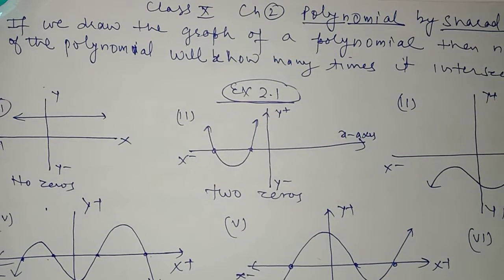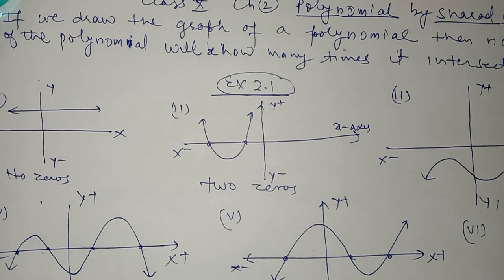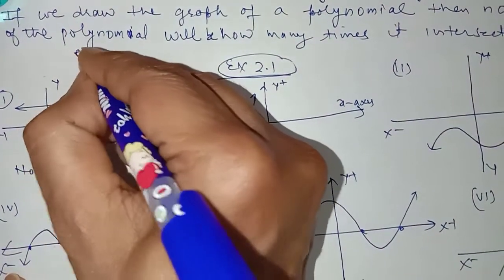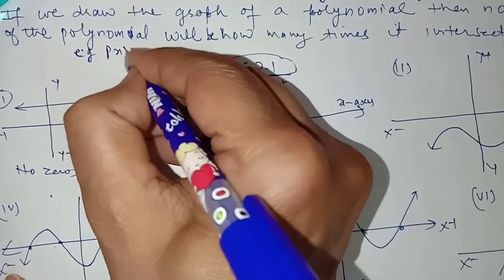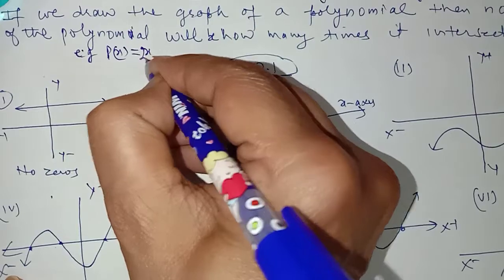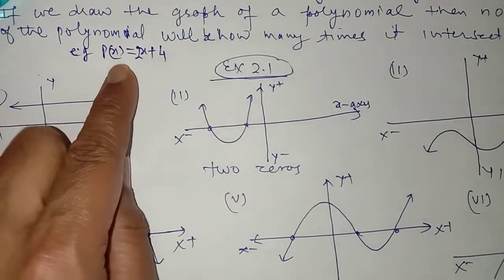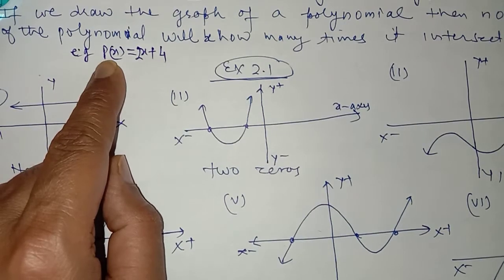In the first exercise you have to find graphically how many zeros the given polynomial has. What is the meaning of the zeros or the roots of the given polynomial? If you write any polynomial, let us say p(x) is equal to 2x plus 4. What is the zero of this polynomial? The zero of the polynomial is obtained by putting p(x) equal to zero.